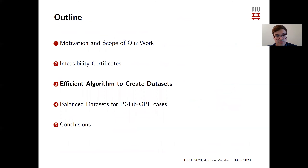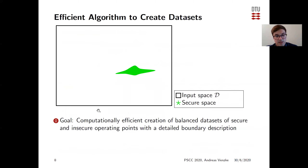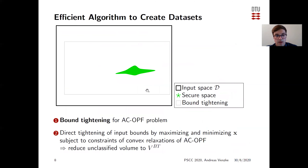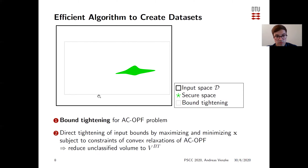Now I will present the efficient algorithm to create data sets. The goal is to computationally efficiently create a balanced data set of secure and insecure operating points with a detailed boundary description. First, we do bound tightening for the AC OPF problem to tighten the convex relaxations. Then we directly tighten the input bounds by maximizing and minimizing entries of X subject to the constraints of the convex relaxation of the AC OPF, reducing the initial input space — quantified as volume V superscript BT.